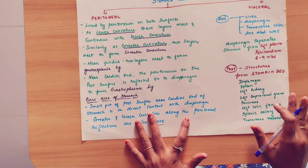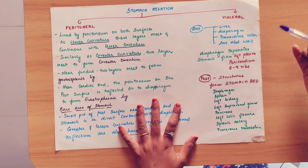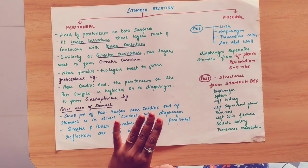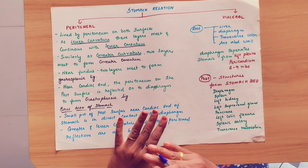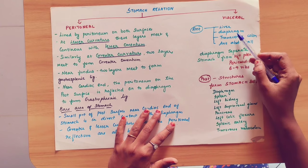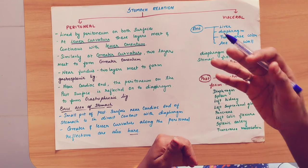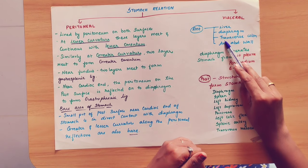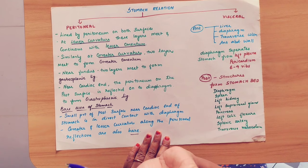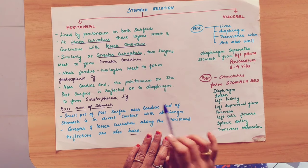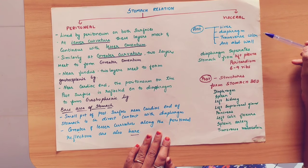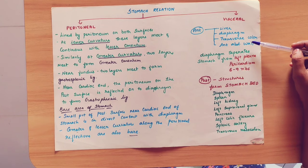This is all about the peritoneal relation. Now coming to visceral relation. There are four structures in contact with the anterior surface of the stomach: first, the liver, which covers the right and left hypochondriac regions; second, the diaphragm in dome shape; third, the transverse colon; and fourth, the anterior abdominal wall.